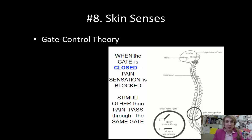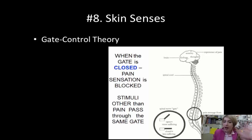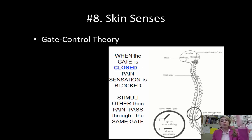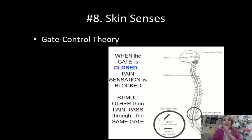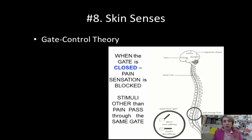Your sense of touch — the tactile sense — has one theory you really need to know: the gate control theory. The gate is imaginary, but the idea is that in your spinal cord, the gate opens when pain sensations go through it. You can close or lower the gate by sending mixed messages — like rubbing something after you bump it, which makes it hurt less by sending confusing signals up to the spinal cord.